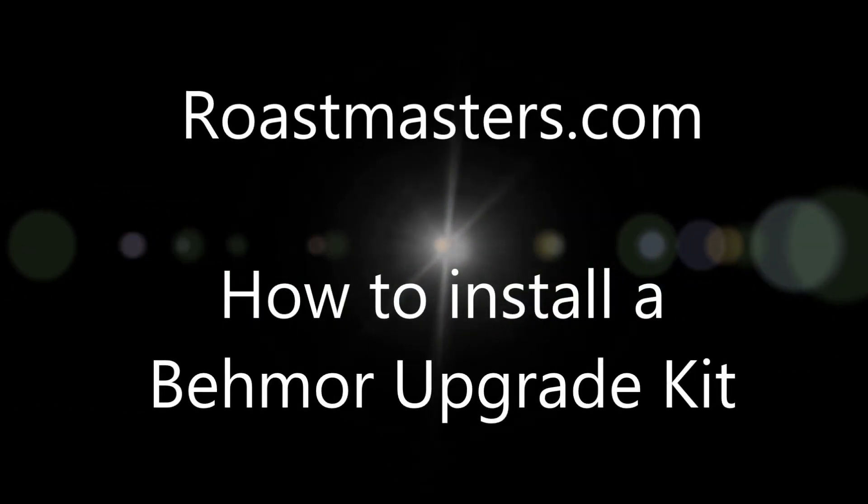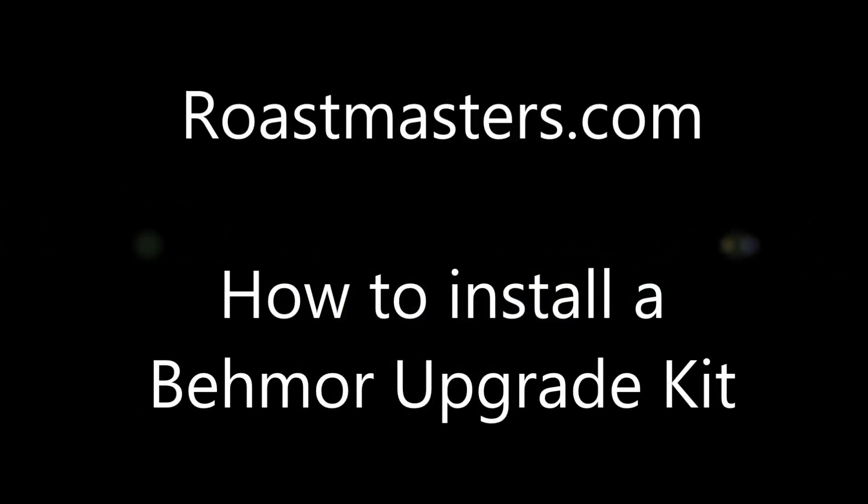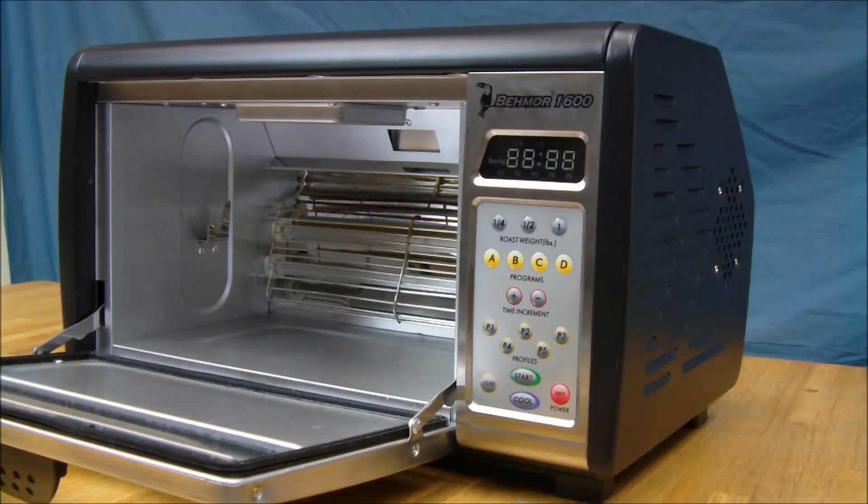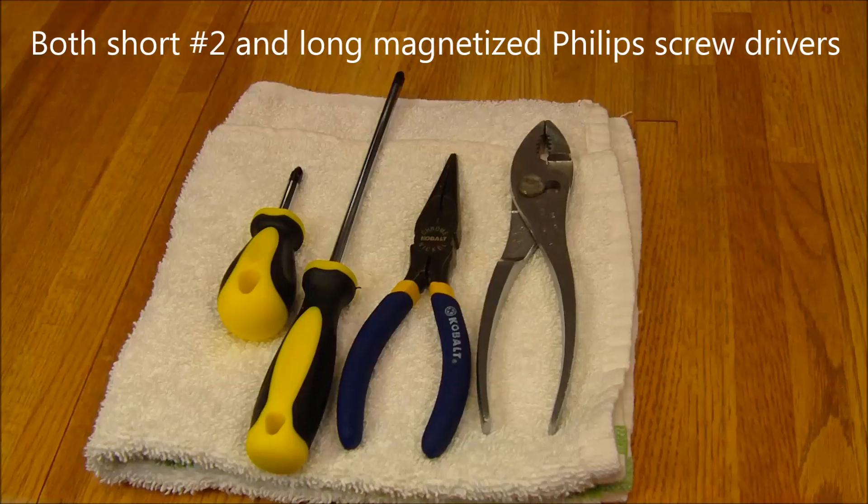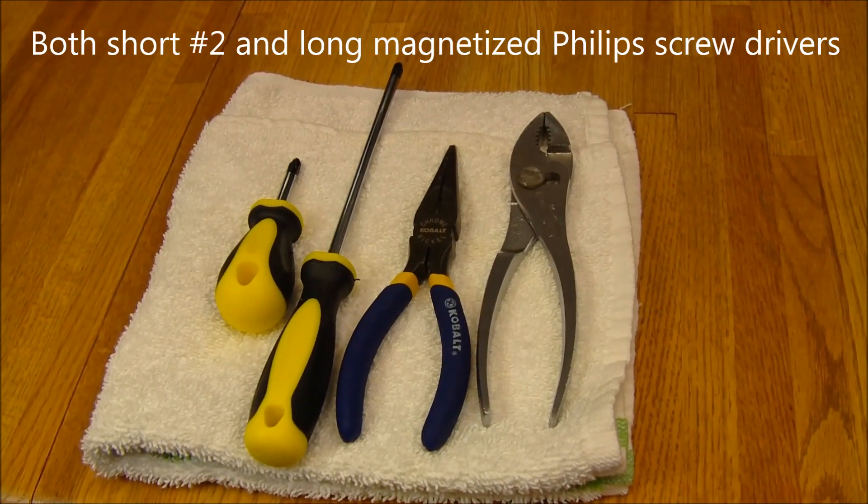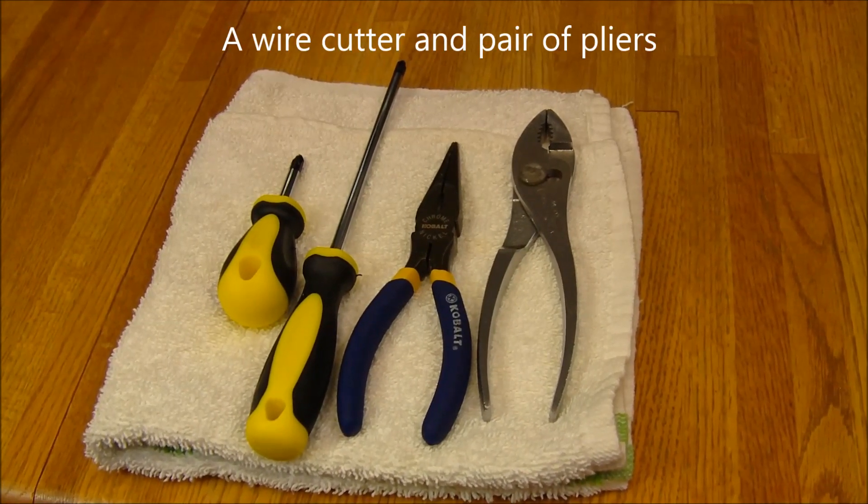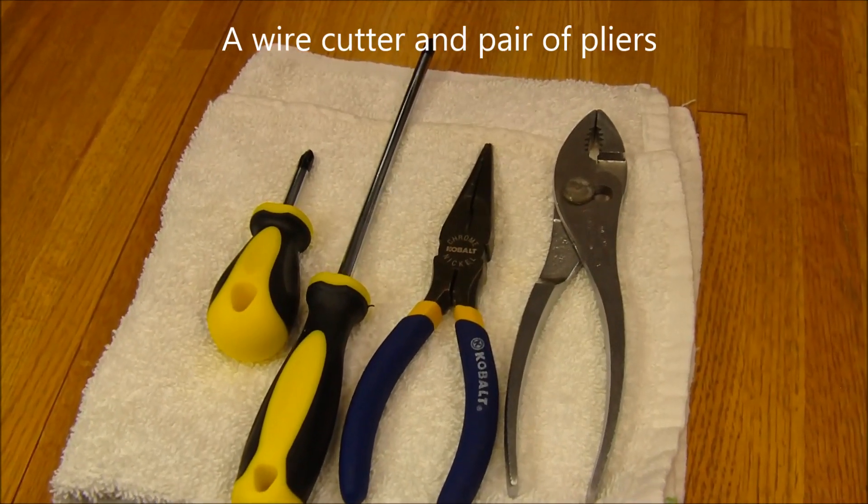Today we'll be showing you how to convert a Beamware 1600 home roaster to a Beamware 1600 plus model by installing a new control panel. While not a difficult installation, a few common tools are needed including a number two short Phillips screwdriver, a long magnetized one, a pair of wire cutters, and a pair of pliers.